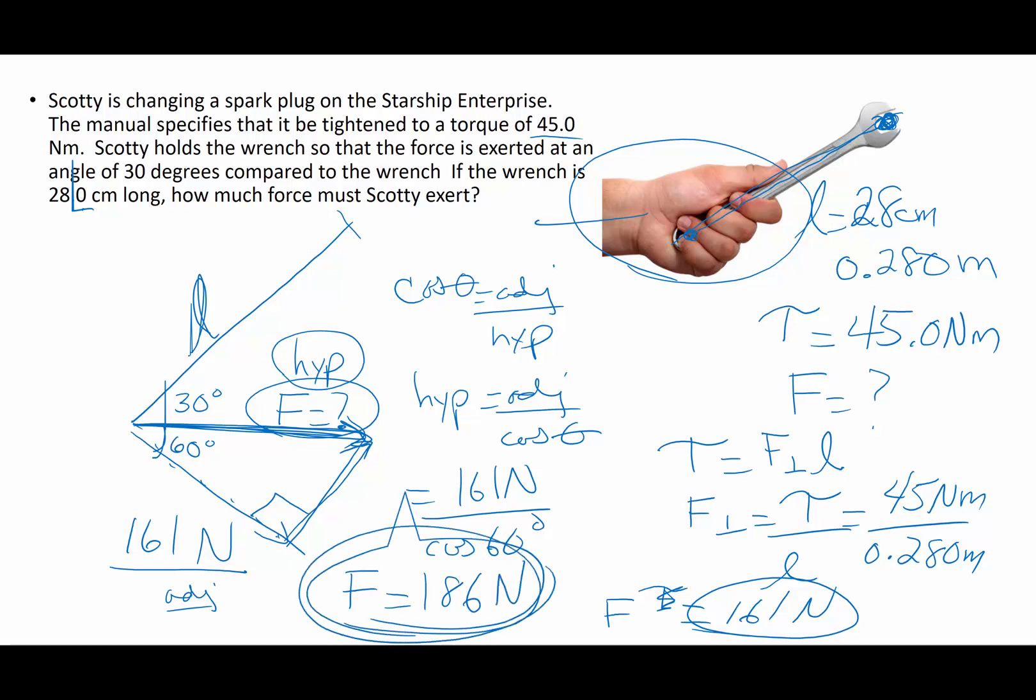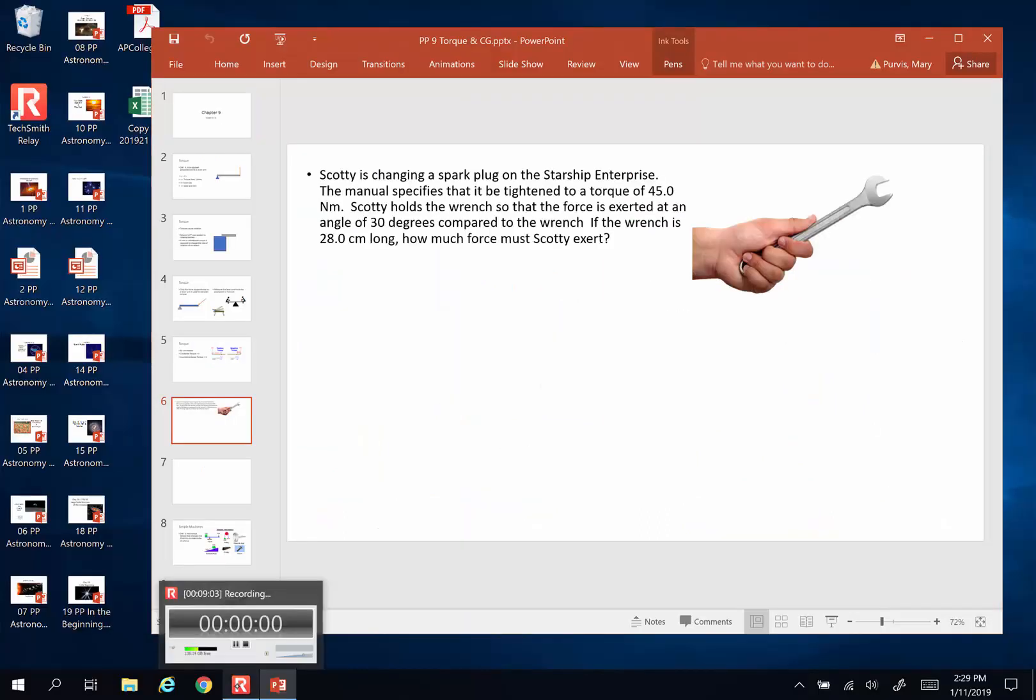And why is this a bigger number than what is required? Because his hand is not perpendicular. There is that extra 30 degree angle right here. And that means he has to exert more force because of the weird angle. Sometimes things are complicated on the Starship Enterprise. All right, you guys. We will see you next time. Bye-bye.